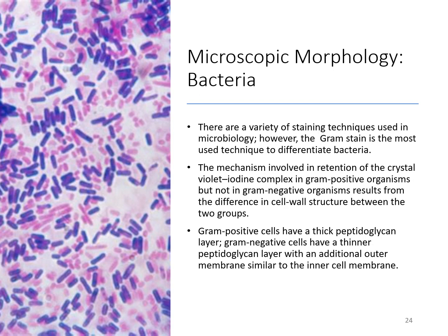There are a variety of staining techniques used in microbiology, but gram stain is the most widely used technique to differentiate bacteria. Gram-positive organisms retain the crystal violet iodine complex, whereas gram-negative organisms do not — due to differences in cell wall structure. Gram-positive cells have a thick peptidoglycan layer, whereas gram-negatives have a thinner layer, so they are unable to retain that crystal violet iodine complex.